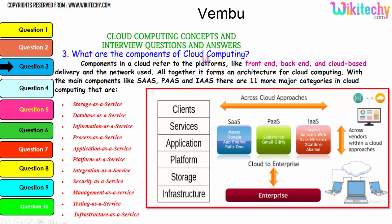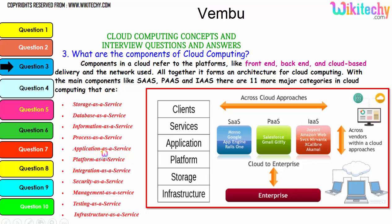The components of cloud computing refer to platforms like front-end, back-end, cloud-based delivery, and the network. Together they form the cloud computing architecture with main components: software as a service, platform as a service, and infrastructure as a service. There are 11 major categories in cloud: storage as a service, database as a service, information as a service, process as a service, application, platform, integration, security, management, testing, and infrastructure.